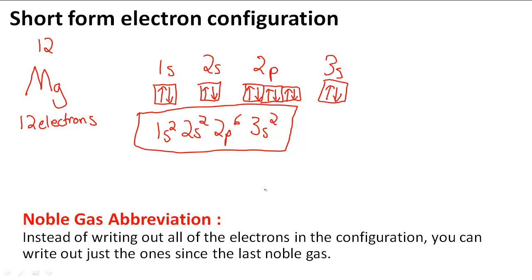We have to find out the last noble gas before magnesium, and that is Ne. If I go to atomic number 10, I see that that's Ne. And to write a noble gas abbreviation short form electron configuration, all I have to do is put Ne, put brackets around it like this, and then write the electron configuration from that point.